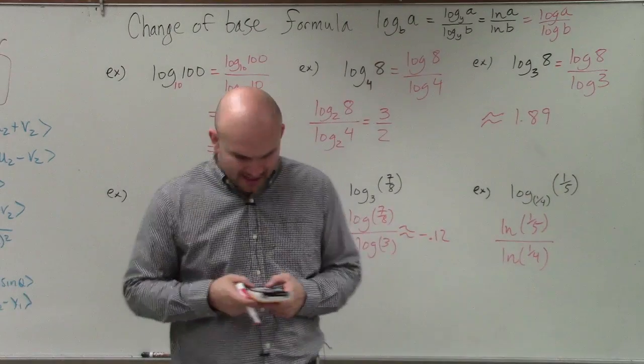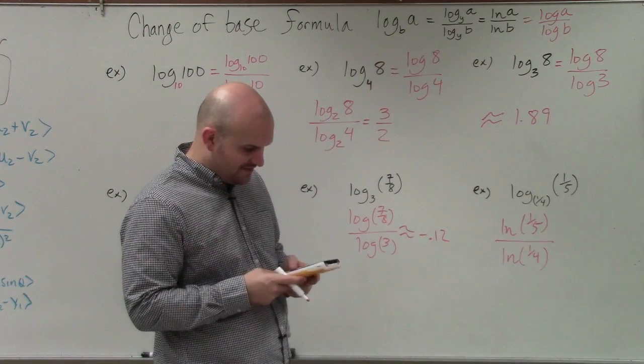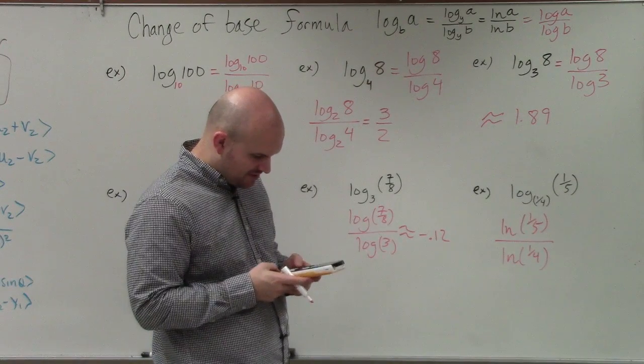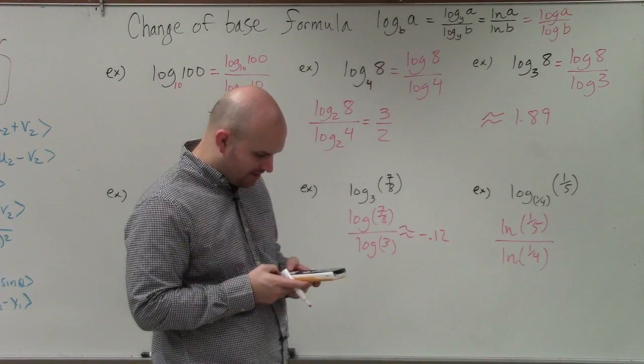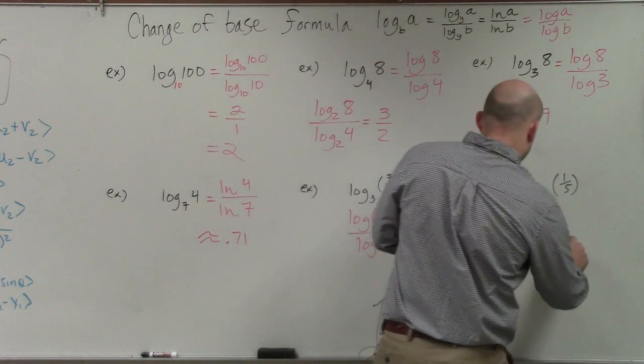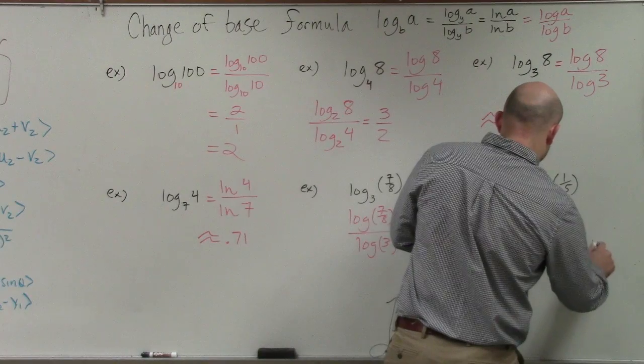So I'll type in ln of 1 divided by 5. Again, I don't want to use the decimal approximation. I'll just do the exact fraction divided by ln of 1 divided by 4. And therefore, I approximate that to 1.16.